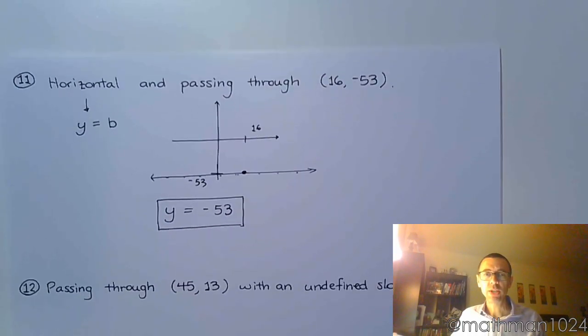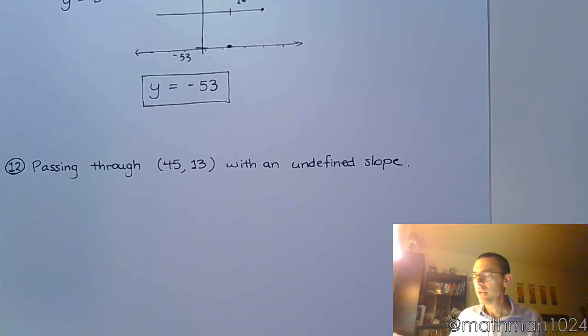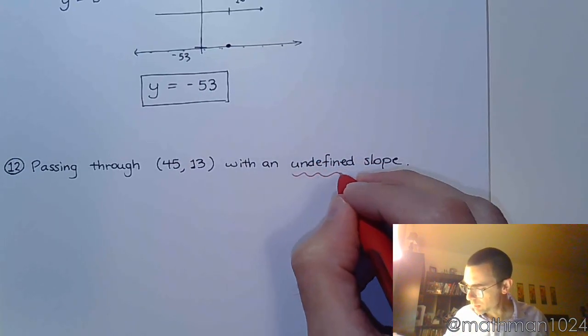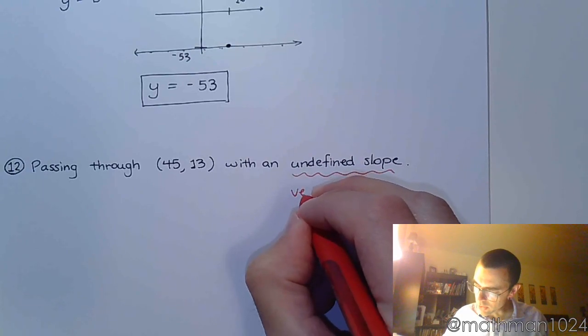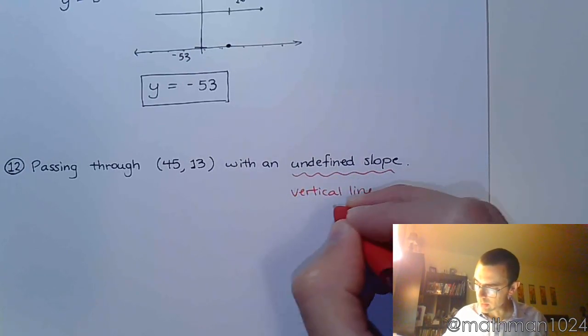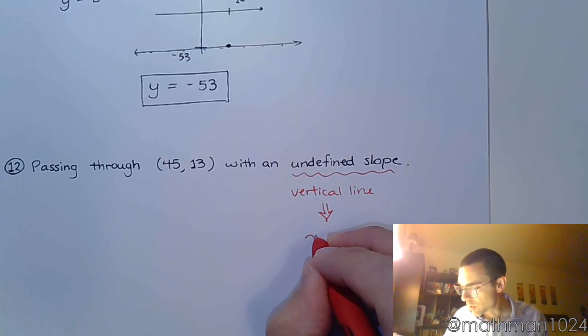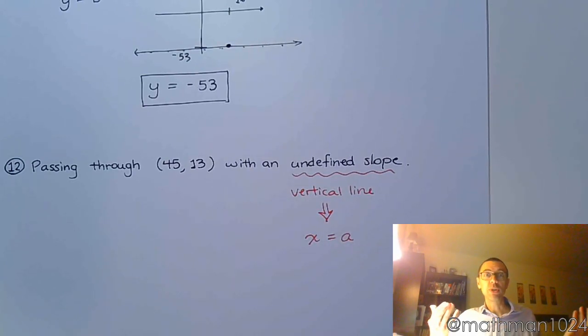Look at the next one. The next one says it's passing through the ordered pair 45, 13 but has an undefined slope. And if you remember, when you have an undefined slope, that means that you are working with a vertical line. And if you're working with a vertical line, it's going to take on the form for the equation of x equals a, where a is whatever the number is.